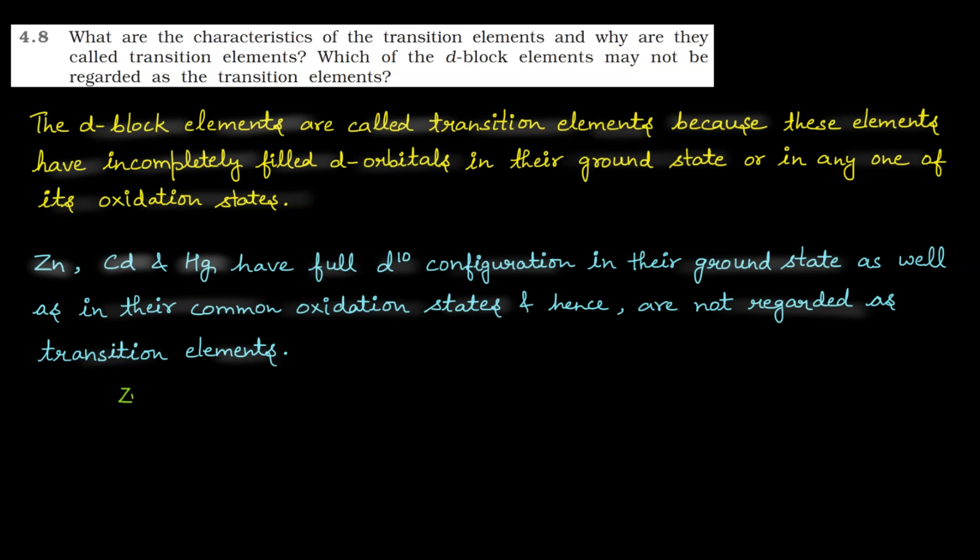How can you understand this? Look, you have taken zinc. Zinc atomic number is 30. So what will be electronic configuration? Argon, 3d10, 4s2. So here we have completely filled d orbital. So now we can't say that it is transition element.